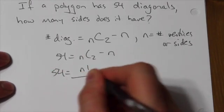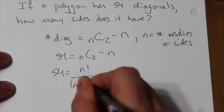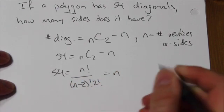So now we apply the definition. That becomes n factorial over n minus 2 factorial 2 factorial minus n.